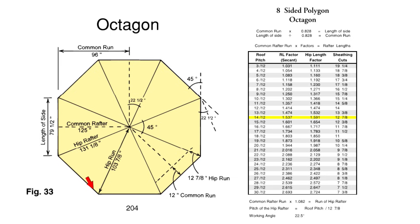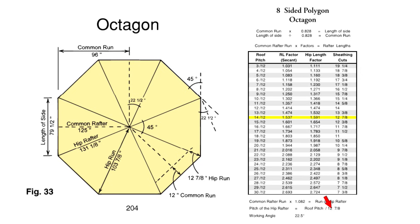Let's take a look at some of these factors. Oftentimes you will need to know the run of the hip rafter — from the outside corner back to the center. We can quickly get that: common rafter run times 1.082 gives us the run of the hip rafter. We also have the pitch of the hip rafter. On a regular rectangular hip roof, the pitch of the hip will always be the pitch over 17. On an octagon roof, the pitch of the hip rafter would instead be the roof pitch over 12 and 7/8. So if you had an 8/12 roof, the hip pitch would be 8/12 and 7/8. For the model we're building today, we're doing a 14/12, so the hip pitch would be 14 over 12 and 7/8.